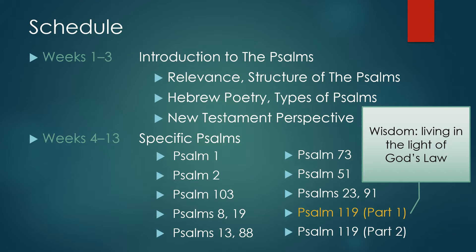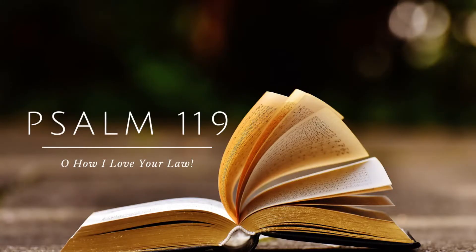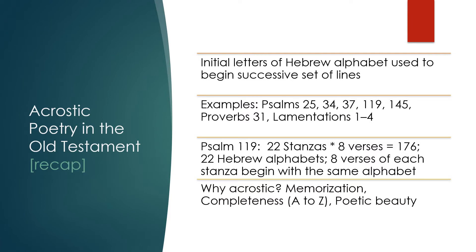Picking up from last week, we looked at Psalm 119. We broke it up into two parts. It's one of the most precious psalms, but because of its length it can be intimidating. One of the interesting features is that it is an acrostic, divided into 22 stanzas, each stanza having eight verses. Each verse in a stanza begins with the same consecutive letter of the Hebrew alphabet — the first eight verses all begin with Aleph, the next eight with Bet, and so on.